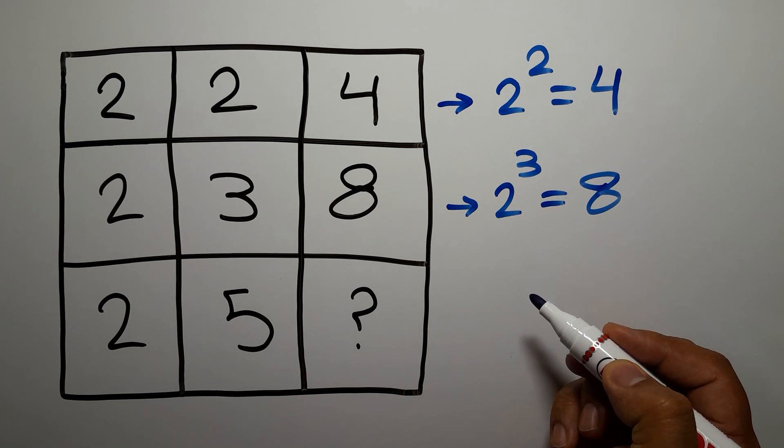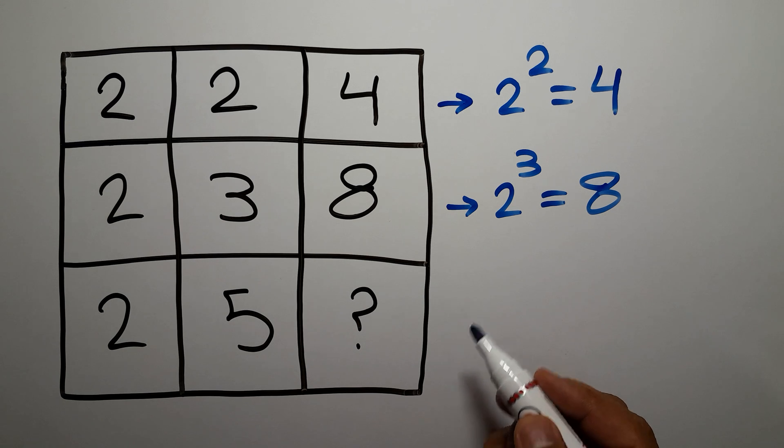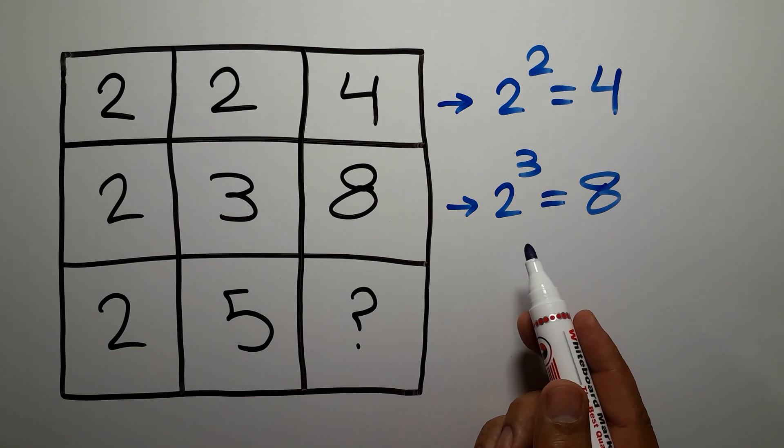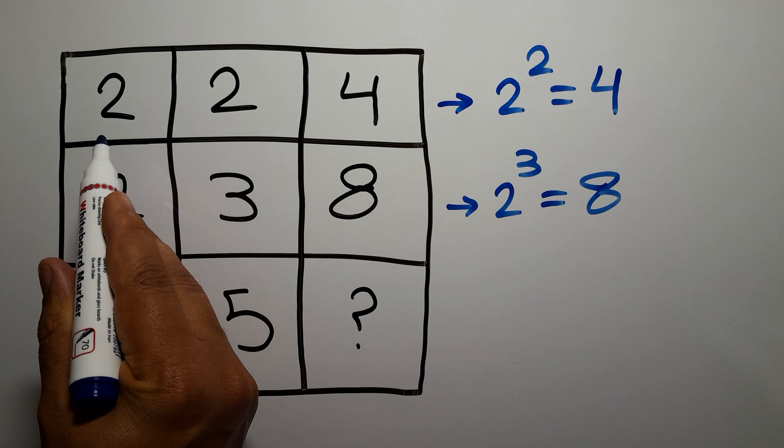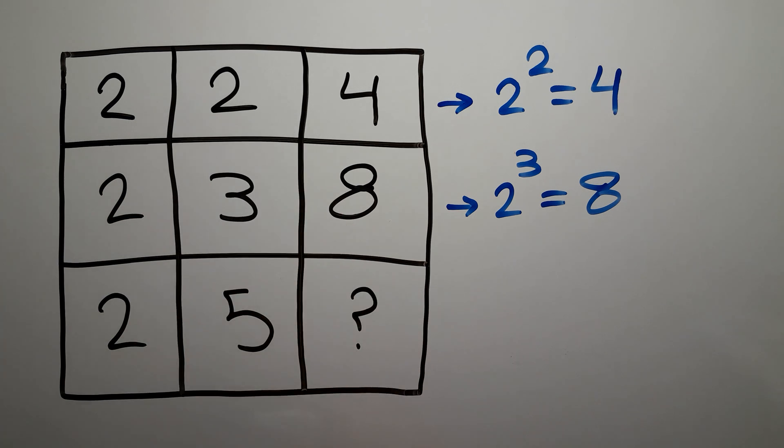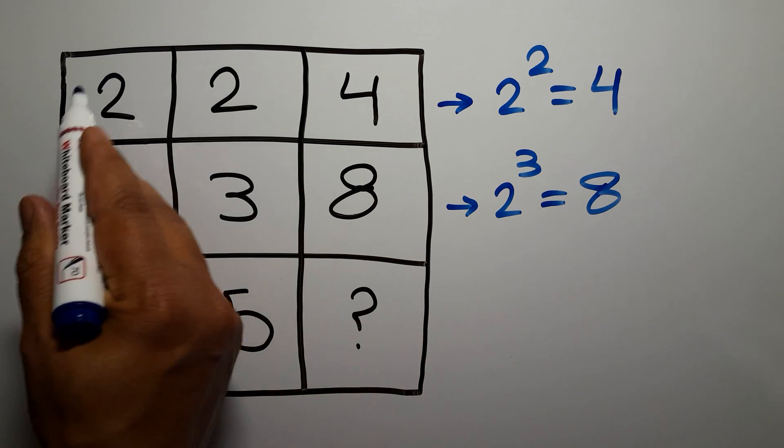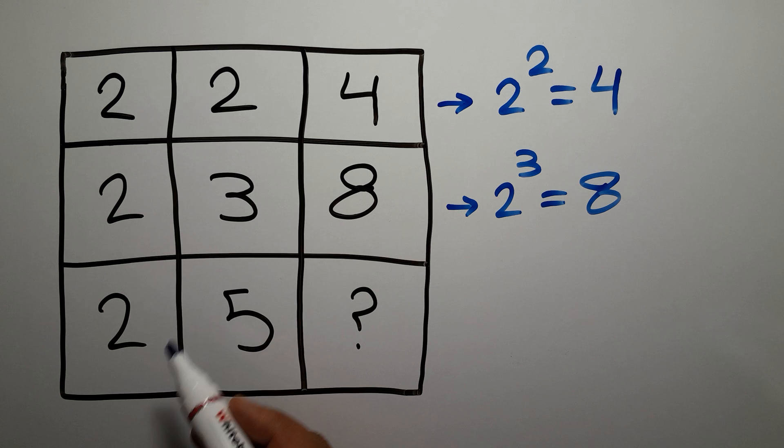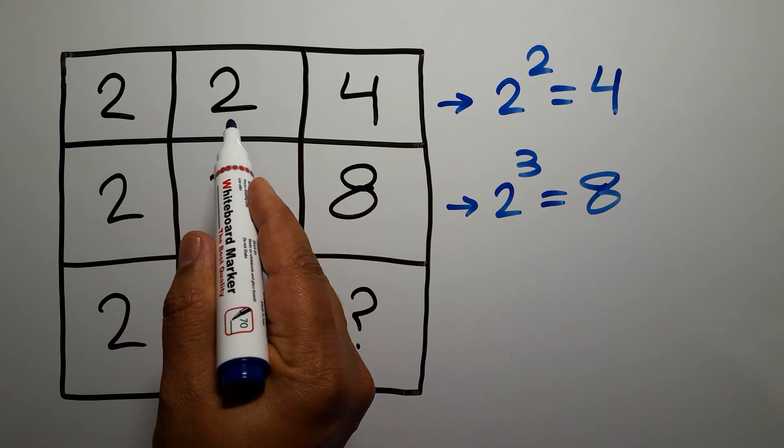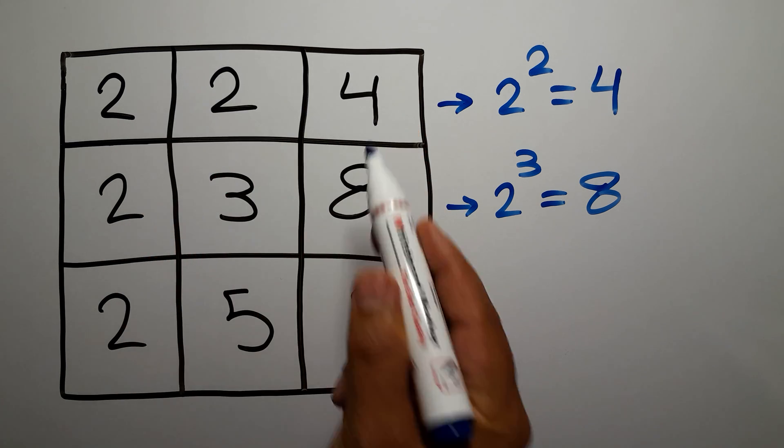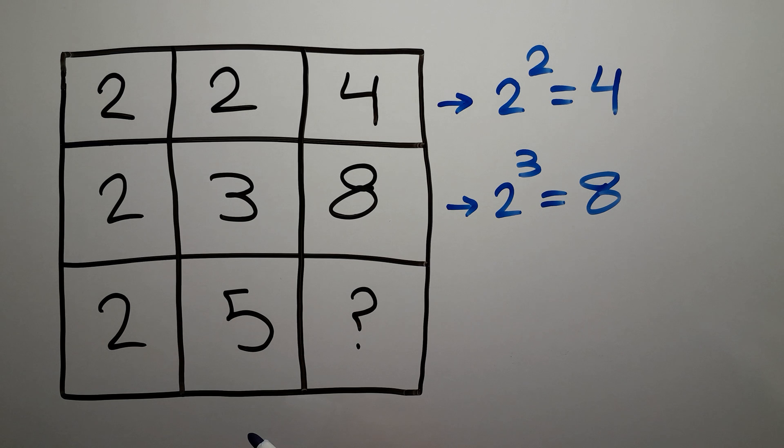So therefore the pattern that exists here is the first number of each row to the power of the second number gives us the third number. Okay, and now let's use this pattern to calculate the missing number.